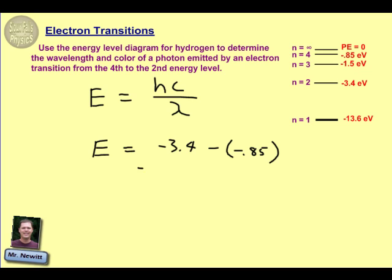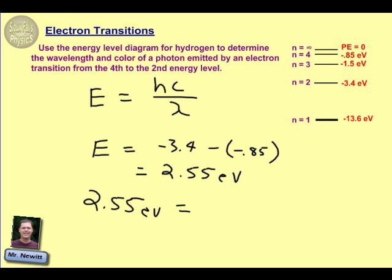In doing that, you'll get an energy value of 2.55 electron volts. We can then put that into our equation for E. H and C are just constants — those two constants multiplied together are equal to 1,240 when we're using the electron volt conversion for H — and we're trying to find the wavelength.